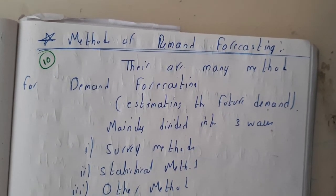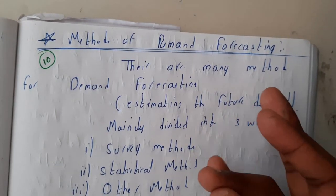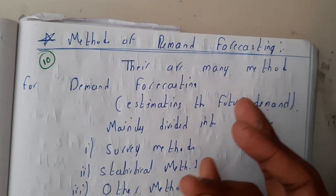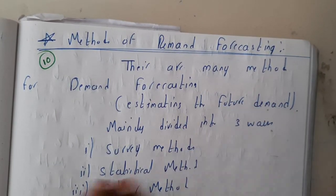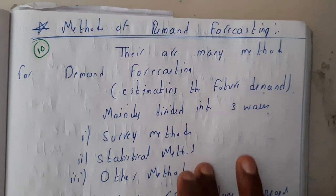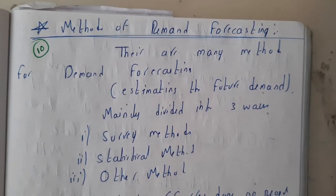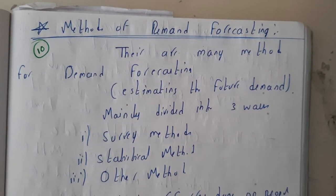Your question will be: how can they expect about the future? There are totally three main methods — survey, statistical, and other methods. We will be covering these three methods in our next lectures. Thank you for watching.